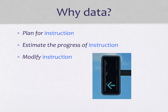Let's first specify the source of data we're talking about in this unit. We're talking about information gathered specifically to help plan for, estimate the progress of, and modify instruction, and mostly for individual children. In fact, data measuring children's learning and behavior are what educators use to determine the effectiveness of instruction. If a child is making good progress, then it's quite likely that he or she is receiving responsive instruction. If a child is not making good progress, then the instruction needs to change. Notice that this way of looking at data makes educators responsible for students' progress.